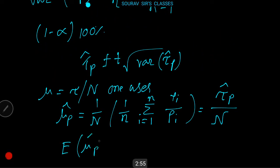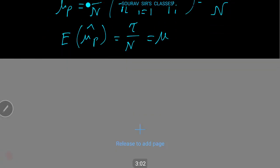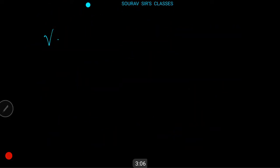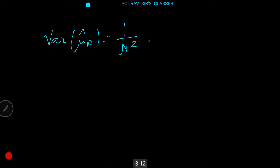E(μ̂_P) = τ / N = μ. The variance is Var(μ̂_P) = (1/N²) × Var(τ̂_P).